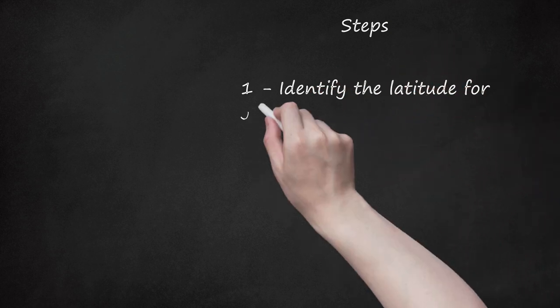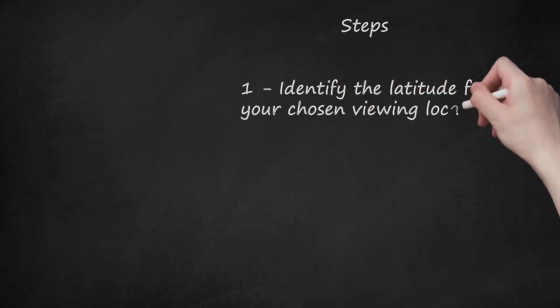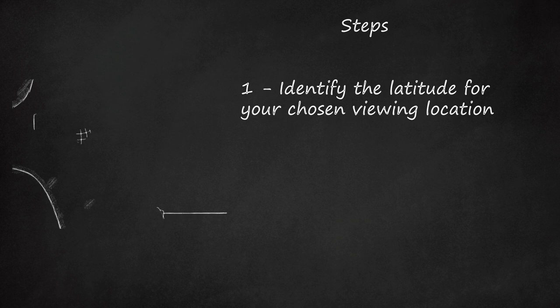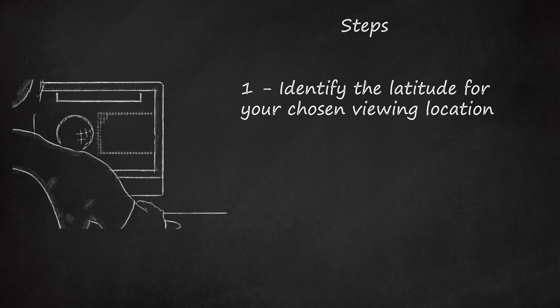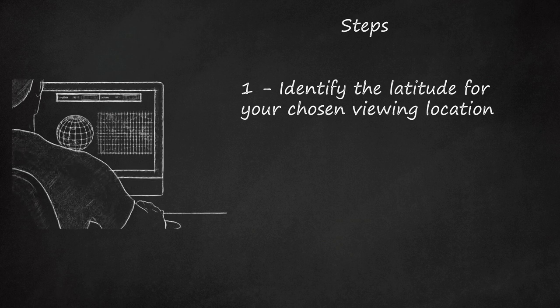Step 1: Identify the latitude for your chosen viewing location. For amateur purposes, you only need to narrow it down to an accuracy of one-tenth of a degree, rounded up to the nearest tenth. For example, downtown Boston is located at 42.3 degrees north latitude. Write this down, you will need it later on.